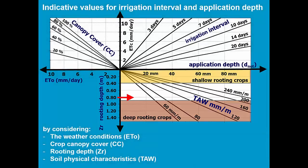For example, if we have a rooting depth of 80 cm and a soil with a TAW of 120 mm per meter, then the maximum application depth is 48 mm. Applying more water is likely to result in deeper percolation losses. If the reference evapotranspiration is 6.5 mm and the canopy cover 90%, then you get a crop transpiration of about 7.5 mm. For that crop transpiration and that application depth, the irrigation interval is about 6 days and a half.